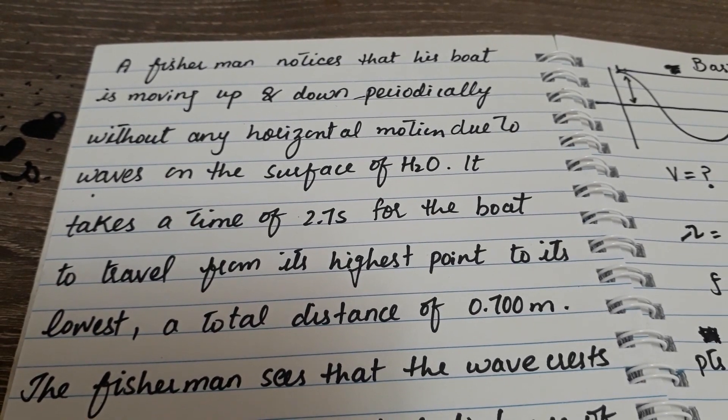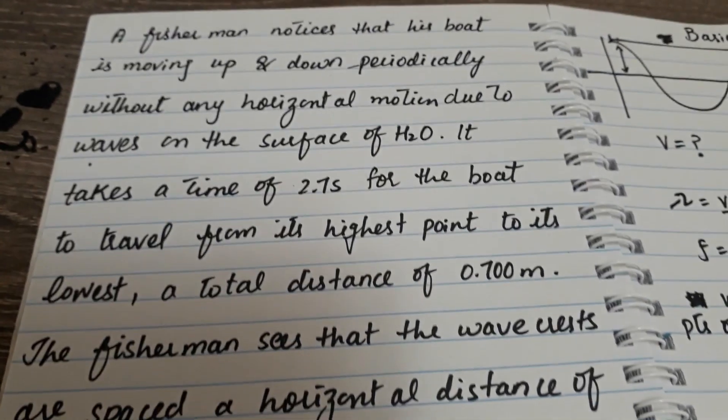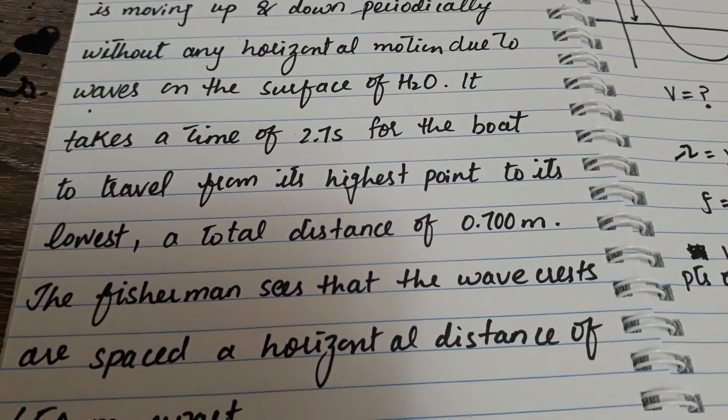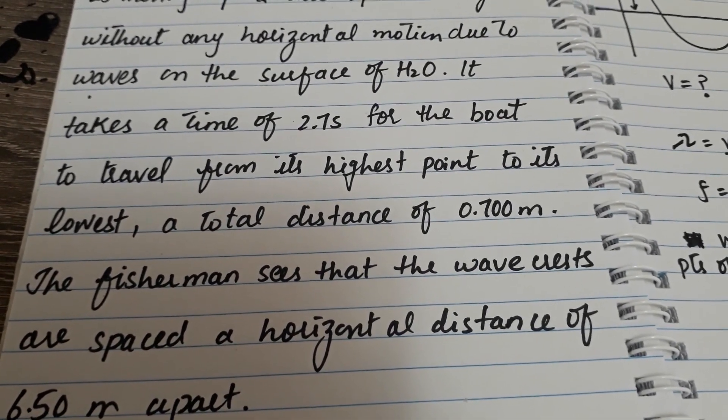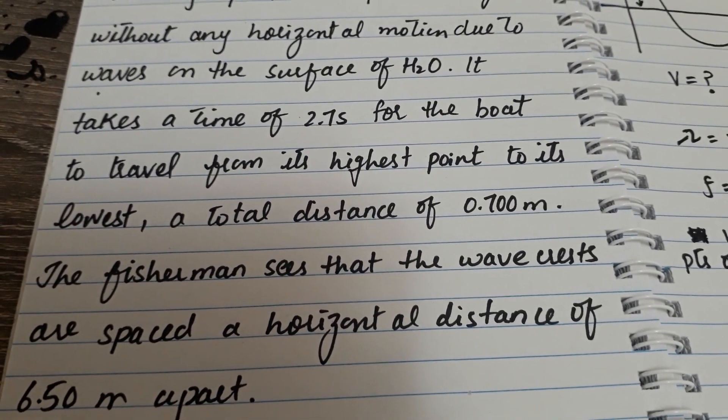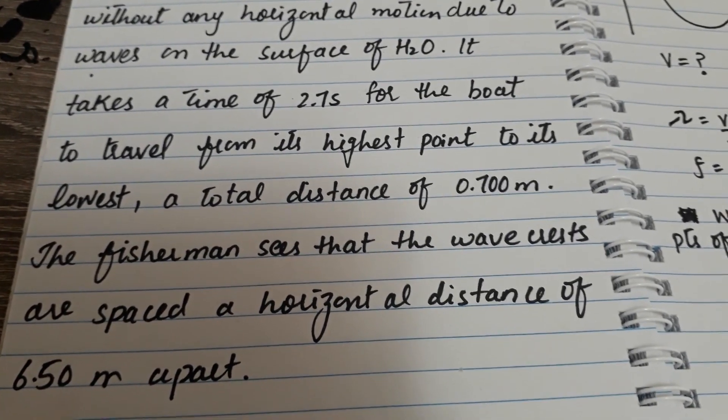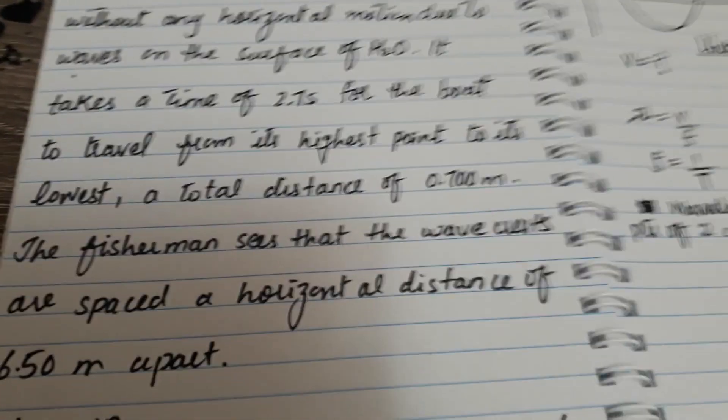Let's read the question first. A fisherman notices that his boat is moving up and down periodically without any horizontal motion due to waves on the surface of water. It takes a time of 2.7 seconds for the boat to travel from its highest point to its lowest, a total distance of 0.7 meters. The fisherman sees that the wave crests are spaced a horizontal distance of 6.5 meters apart.